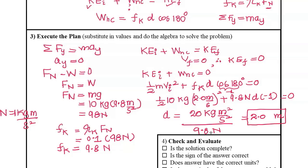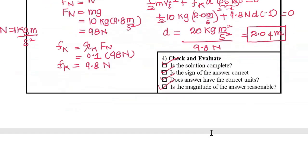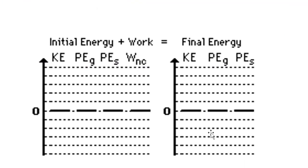The solution is complete. We calculated the distance traveled by the sled using conservation of energy. The unit is correct — meters — and since it's a scalar, there's no sign concern. The magnitude is reasonable. Looking at the energy chart: initially assume kinetic energy is 3 units and initial potential energy is zero. Final kinetic energy and final potential energy are both zero, so all the initial kinetic energy is converted into work done by non-conservative forces, which is negative.